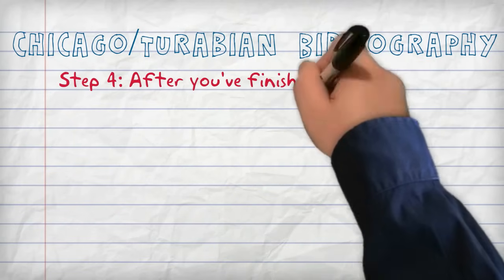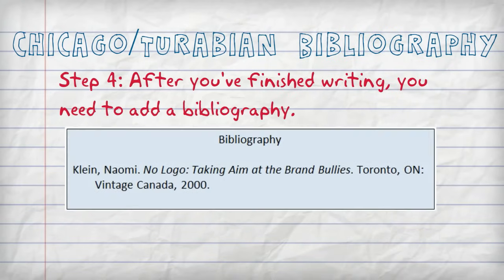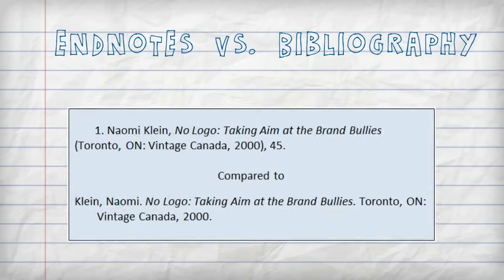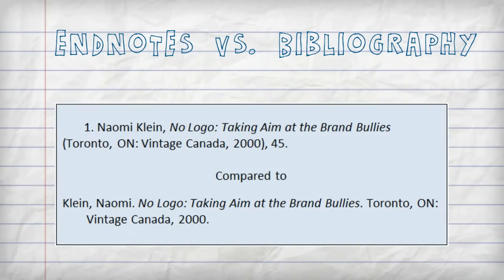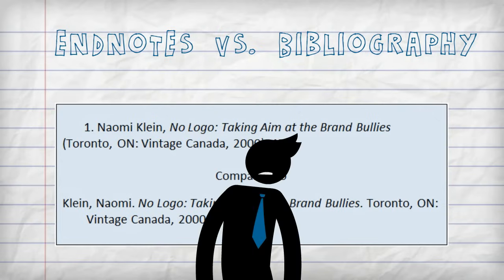Step 4: After you've finished writing, you need to add a bibliography that lists each source once. You'll probably notice there are differences between an endnote and a bibliography entry — like: note number versus no note number; author's first name and last name versus author's last name then first name; commas up here, periods down here. And there are more differences too.